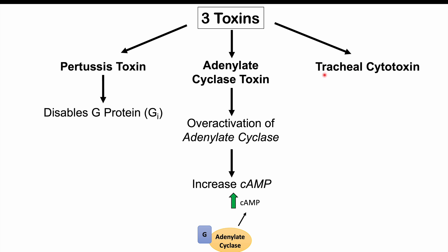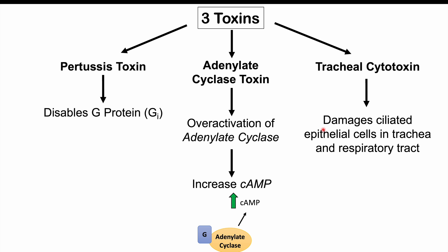The third toxin is the tracheal cytotoxin, which damages ciliated epithelial cells in the trachea and respiratory tract. This causes a subsequent release of interleukin-1, leading to significant inflammatory issues in the respiratory tract. So the three toxins to remember for Bordetella pertussis are: the pertussis toxin, the adenylate cyclase toxin, and the tracheal cytotoxin.